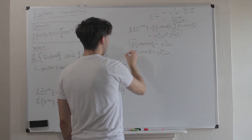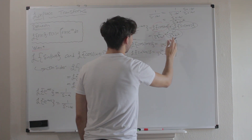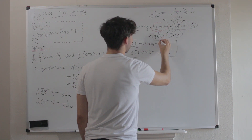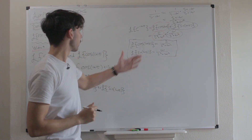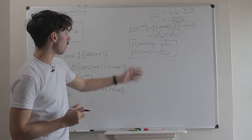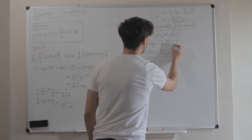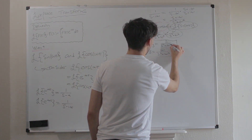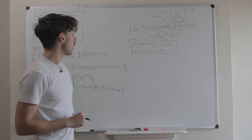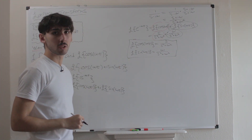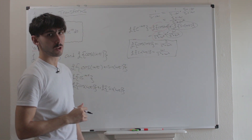Those are our results: the Laplace transform of cos(ωt) = s/(s² + ω²) and the Laplace transform of sin(ωt) = ω/(s² + ω²). You do a quick dive into the complex realm and you come out with these two amazing results. Thank you guys so much for watching — I highly appreciate it and I'll see you in the next video.